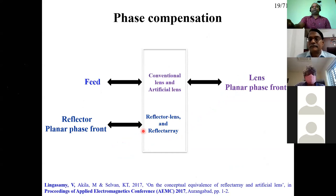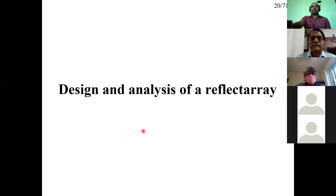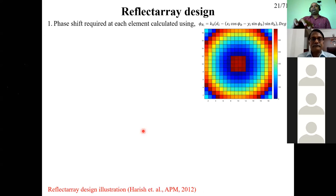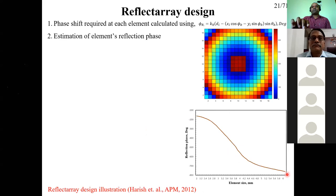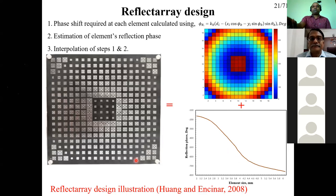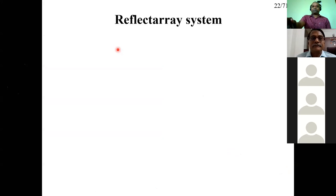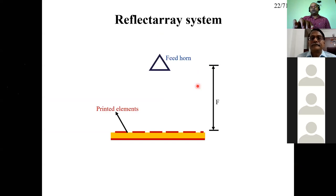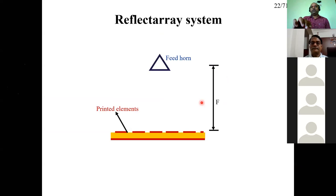Moving to the next part of the thesis — design and analysis of the reflectarray. Briefly: the design requires finding the phase distribution at each location using the parabolic equation, then estimating the reflection phase of the element. By interpolating these two, we can realize the reflectarray system. Our objective was to enhance the bandwidth of the reflectarray. We will now see how each part of the system contributes to bandwidth: the reflectarray aperture, the feed horn placed at focal distance, and the focal distance itself. Since the focal distance is designed for one particular frequency, it varies for different frequencies, affecting bandwidth.